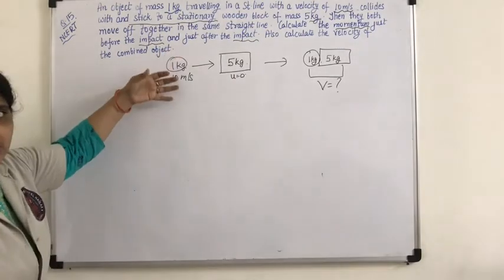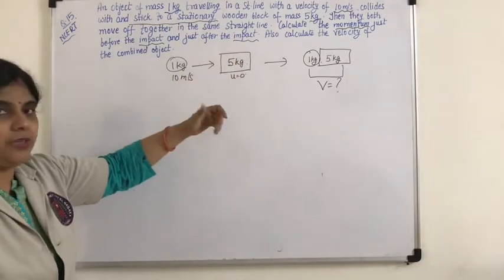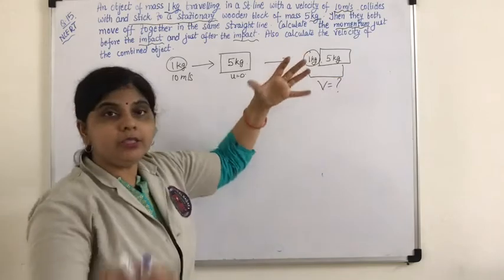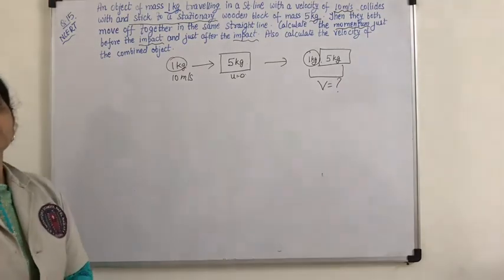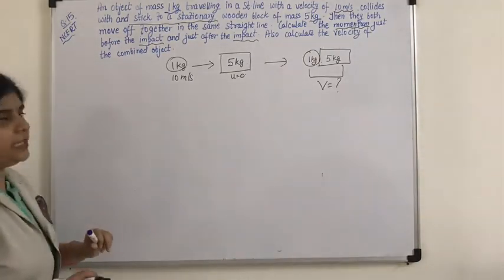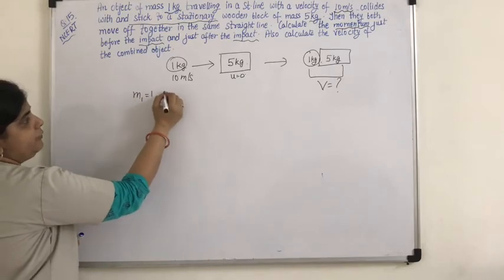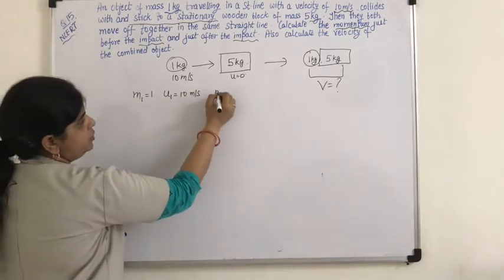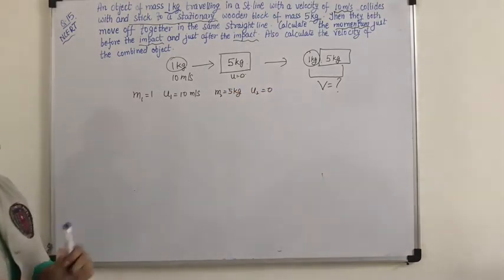Here we are going to use the law of conservation of momentum because there is no external force acting on this. M1 is given as 1 kg and initial velocity U1 is 10 meters per second. M2 is 5 kg and initial velocity U2 is 0.